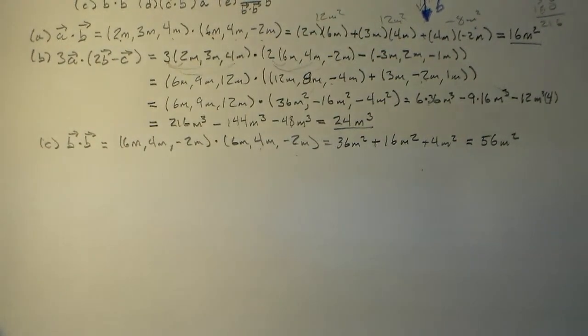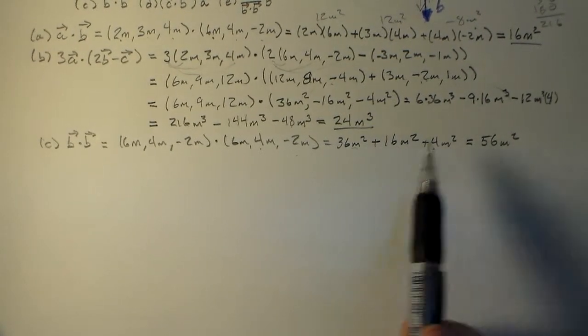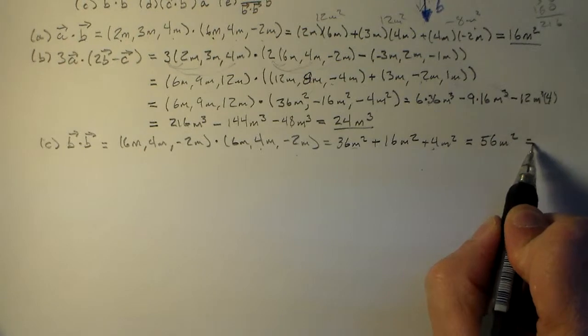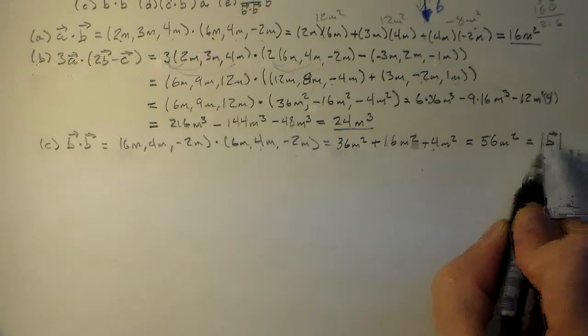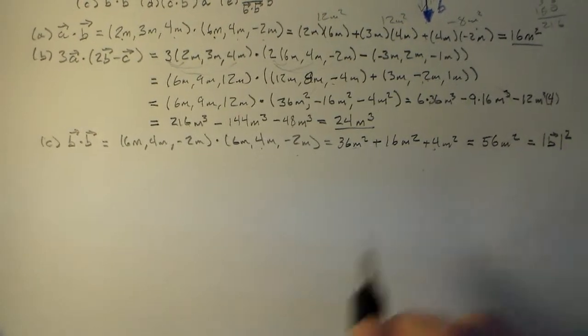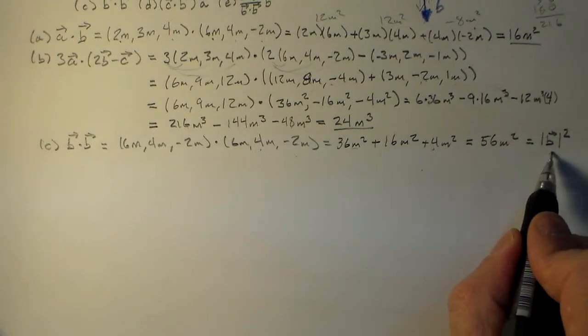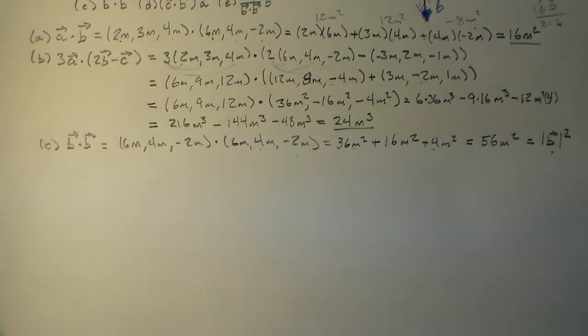So you'll notice what this looks like here is it looks like that thing that goes inside the radical sign for the magnitude. So b dot b is just the square of the magnitude of b. That's something you should get used to.